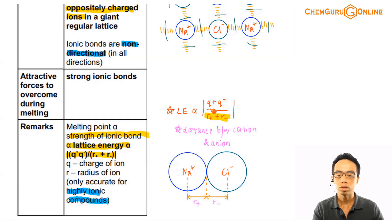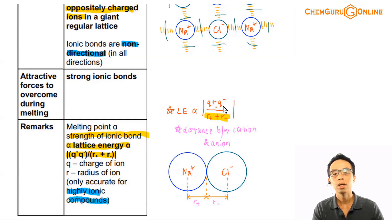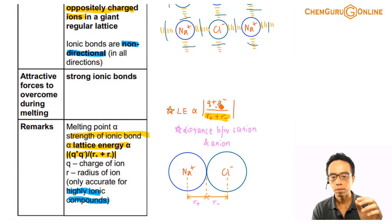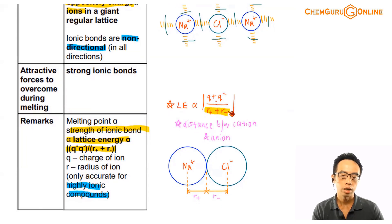Lattice energy is given by this expression: Q⁺ × Q⁻ divided by R⁺ + R⁻. The numerator is a product — Q⁺ times Q⁻. The denominator is a summation — R⁺ plus R⁻. So basically, the charge of the cation multiplied by the charge of the anion, over the size of the cation plus the size of the anion.